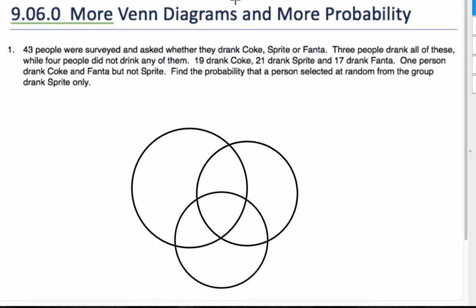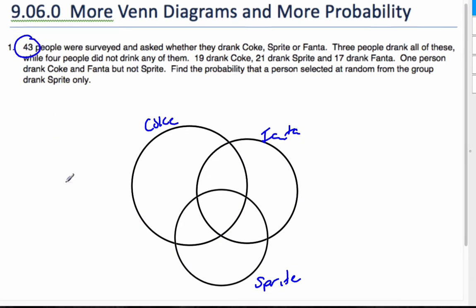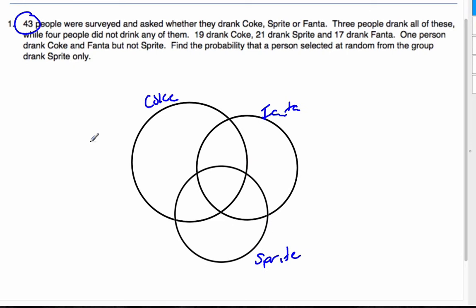What I have is I have my Coke, my Fanta, and my Sprite. In total, I have 43 people that I've surveyed, whether they drink those drinks. When we solve these problems, we always want to start from the middle and work our way out as much as possible. So the first thing I see is three people drank all of them. So that's three here, and four did not drink any of them. So that's four outside here.